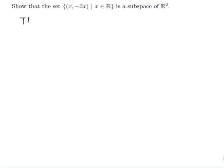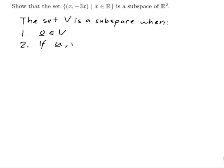Here it is. The set V is a subspace when: 1. The zero vector is in V. 2. If u and v are in V, then u + v is in V. And that's called being closed under vector addition.